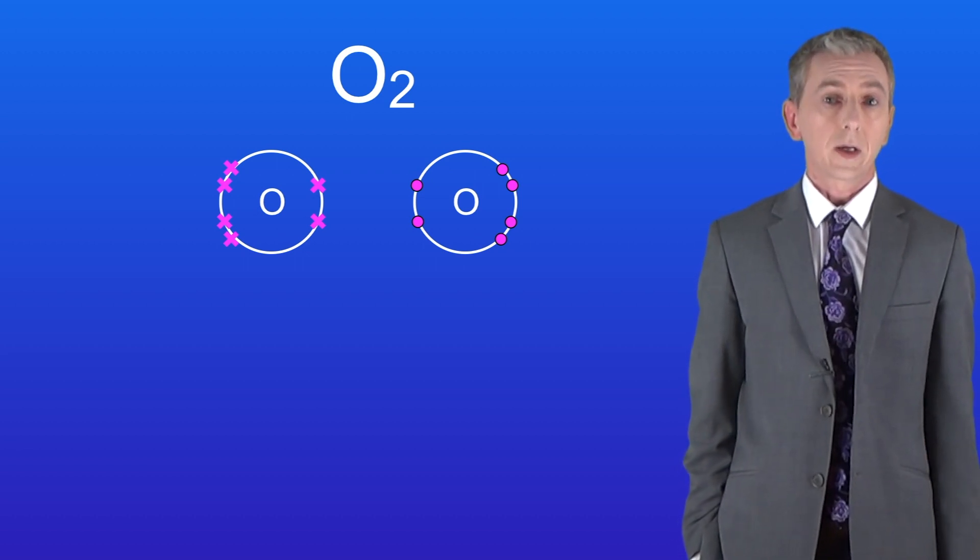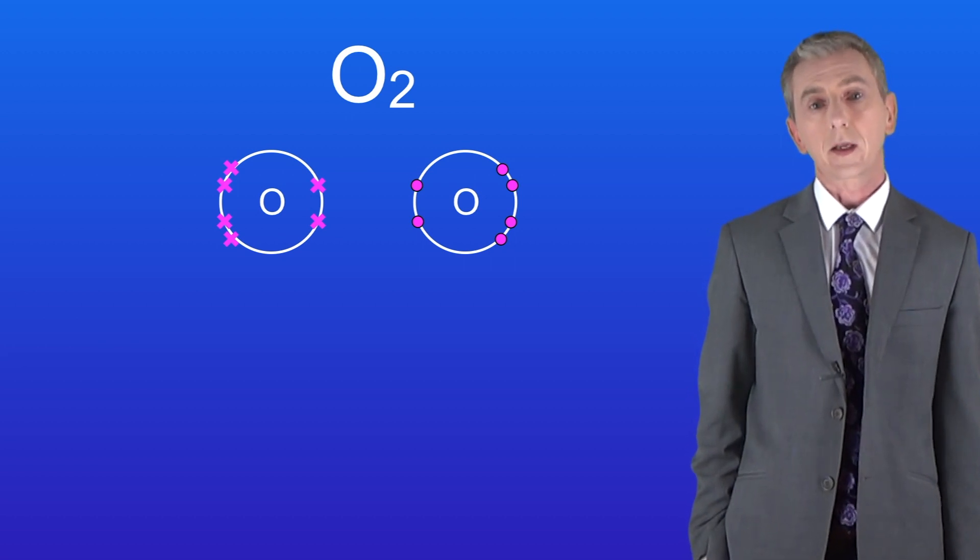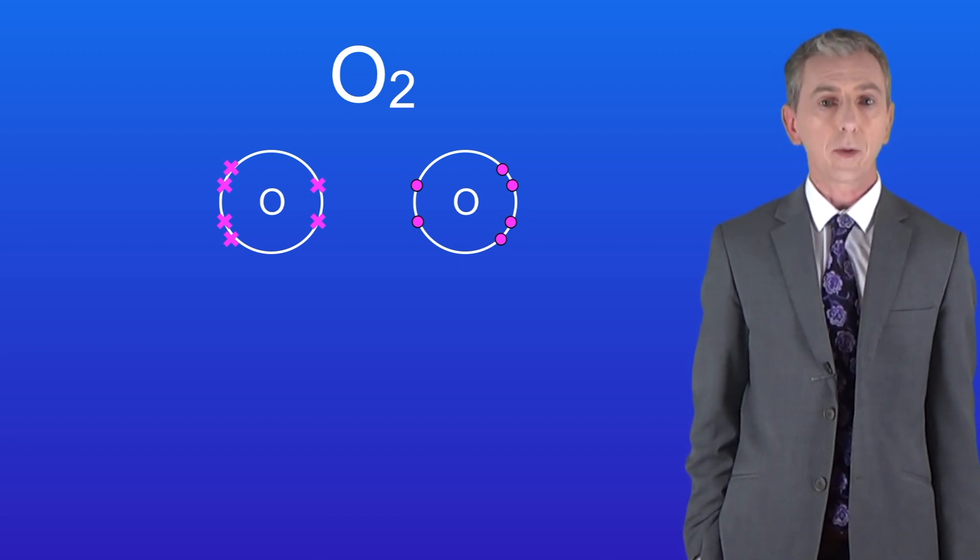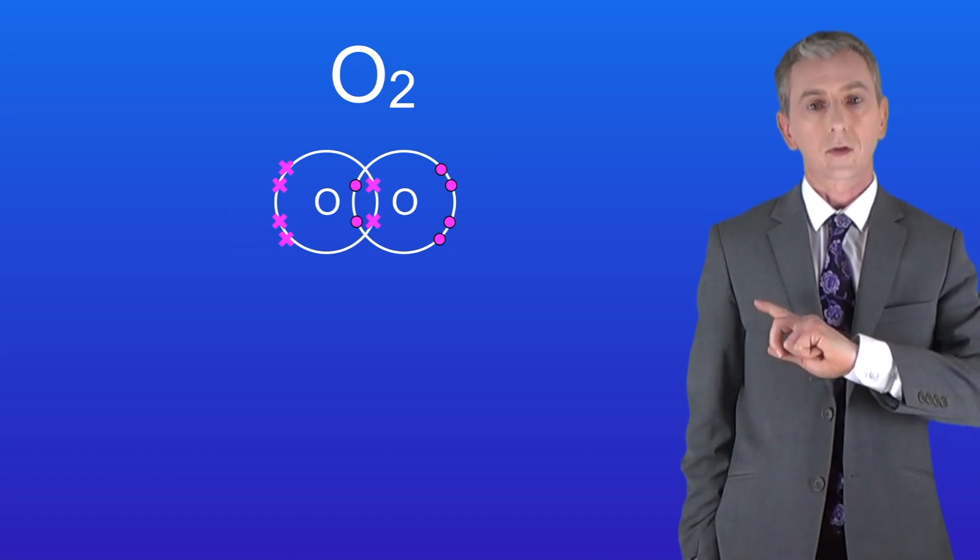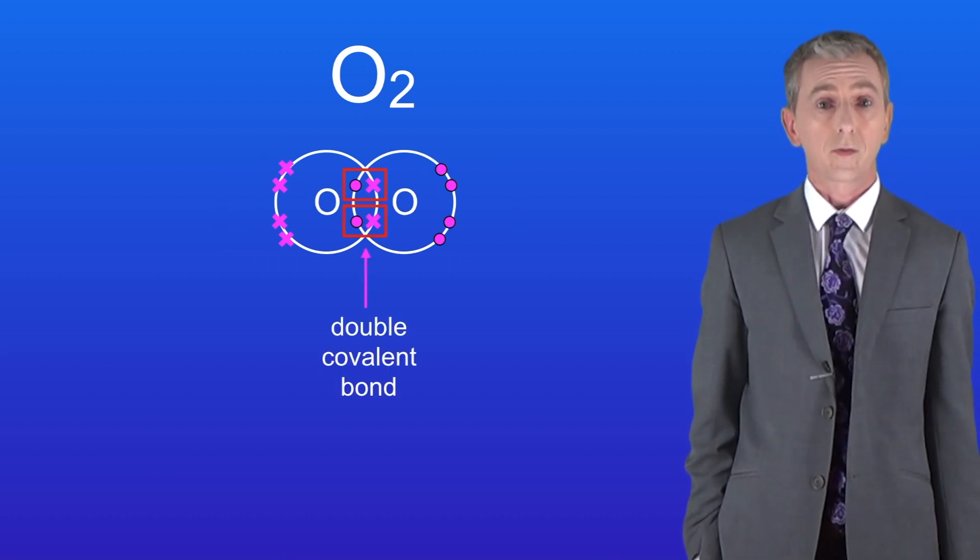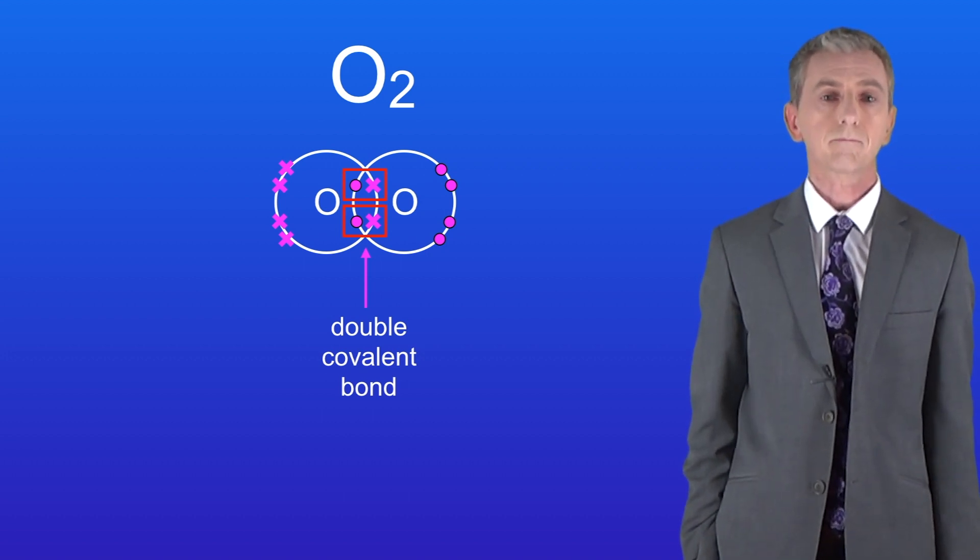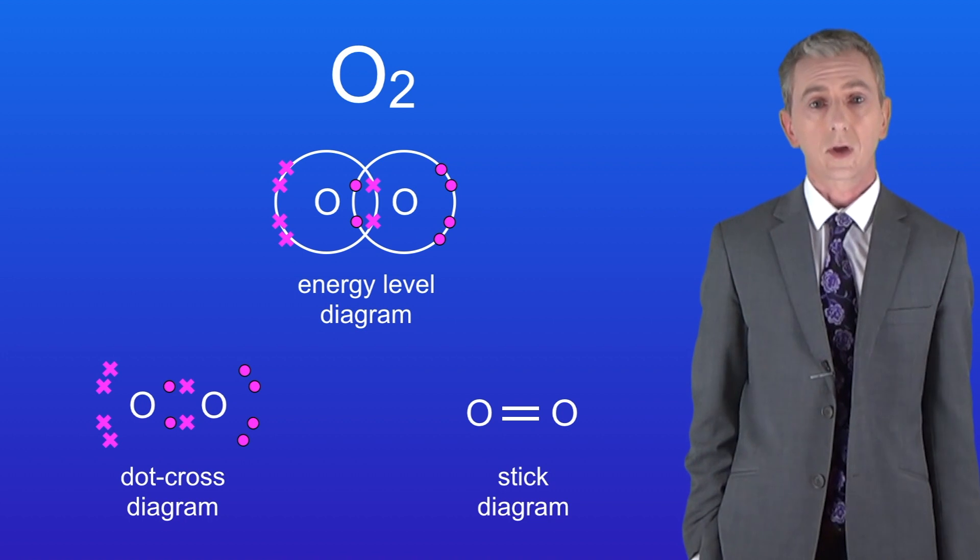Okay so each oxygen atom requires two more electrons to achieve a full outer energy level and they can do this by overlapping their outer energy levels like this. Now you'll notice that this is a double covalent bond because we've got two shared pairs of electrons. Here are the dot cross and the stick diagrams for the oxygen molecule.